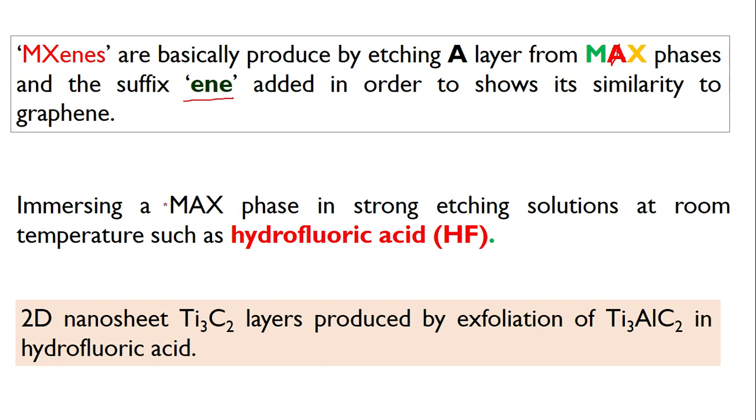So how do we remove this A? For simplicity, we just immerse this phase in a strong etching solution like HF. This is where fluorine comes from. Now let's make it very clear. This is basically MXene. How we get it? We get it by etching method from this MAX phase.